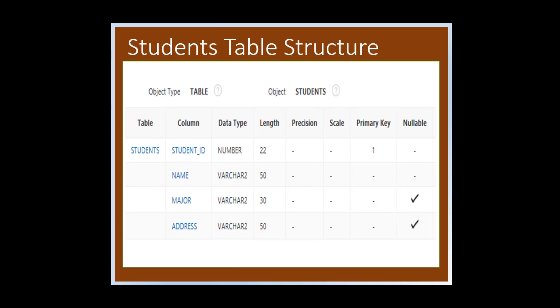Let's look again at the structure of our SQL table, the students table. It has four columns, student ID is the primary key, and student ID and name are not nullable.